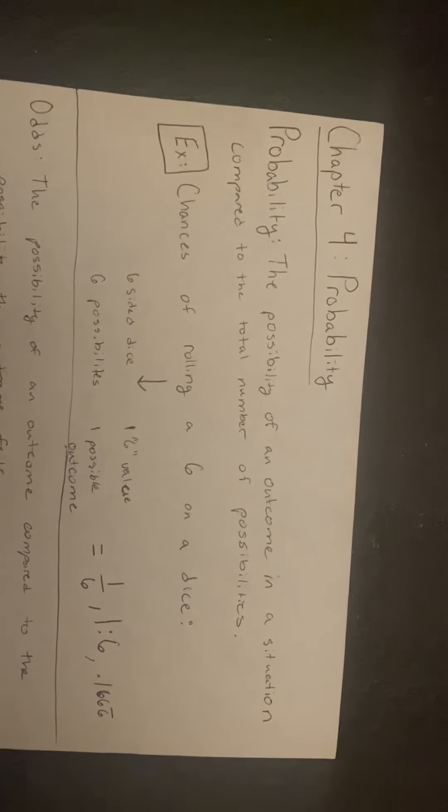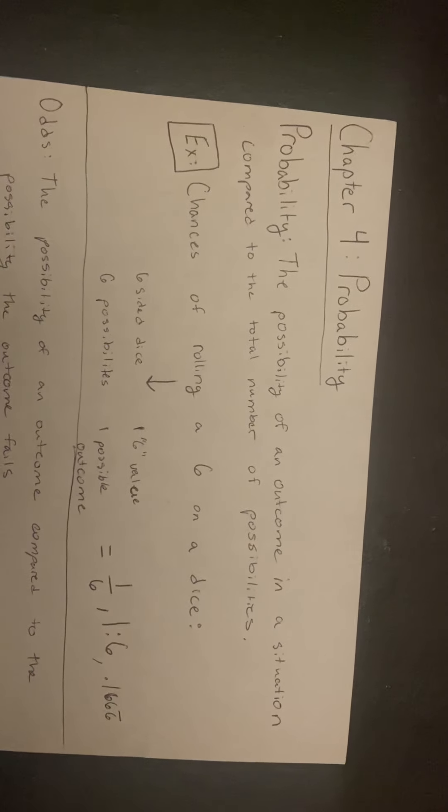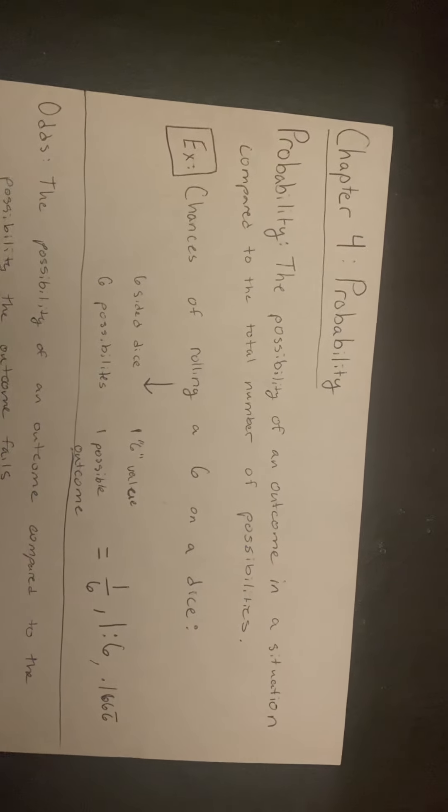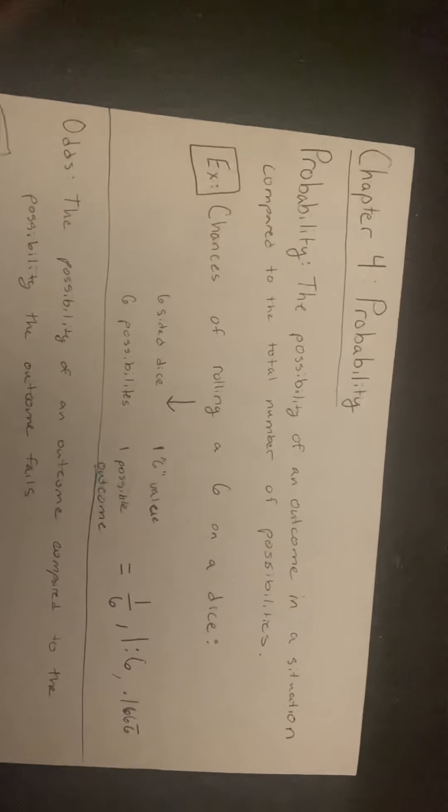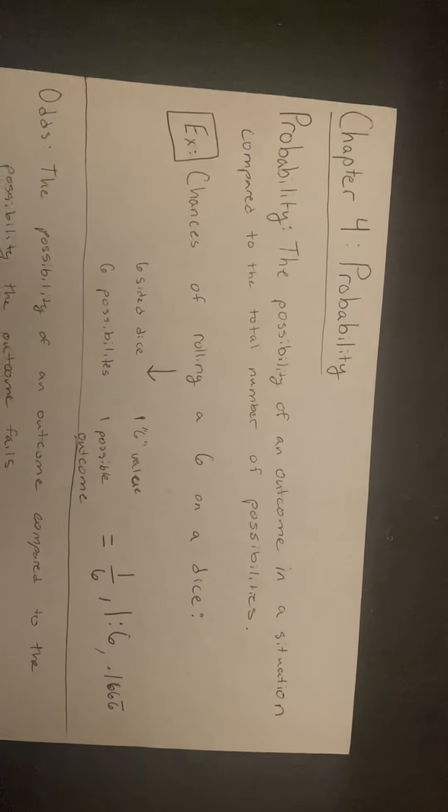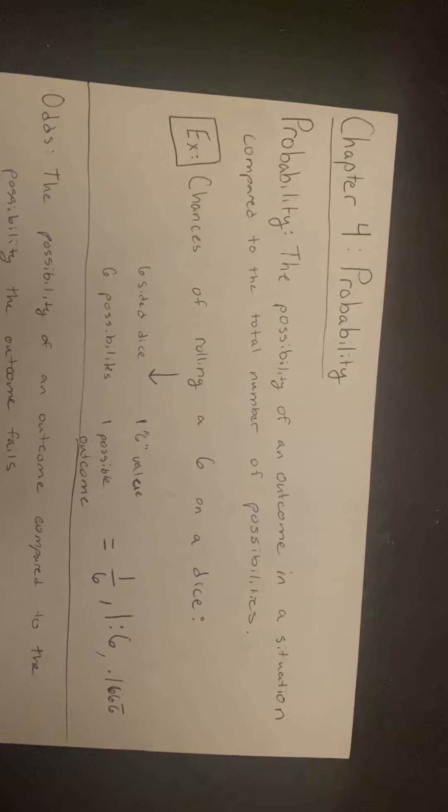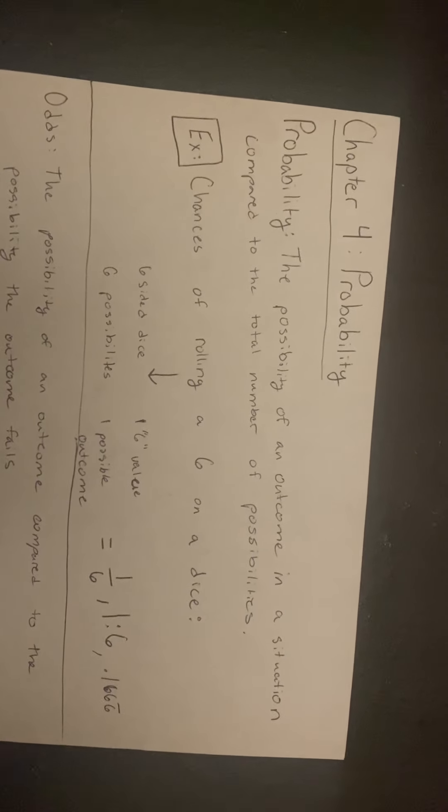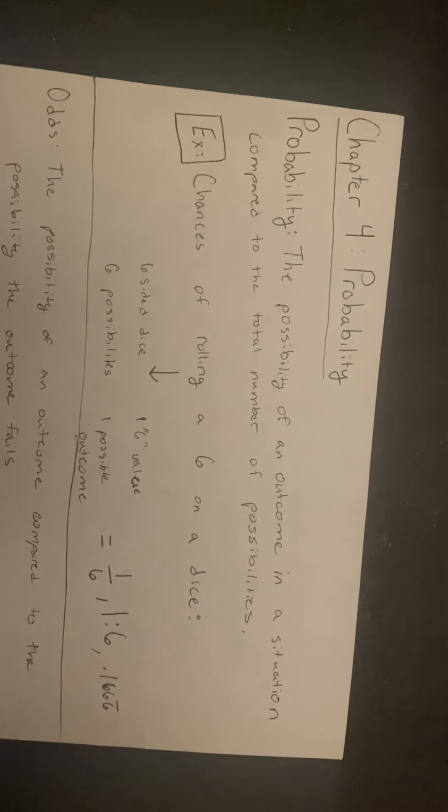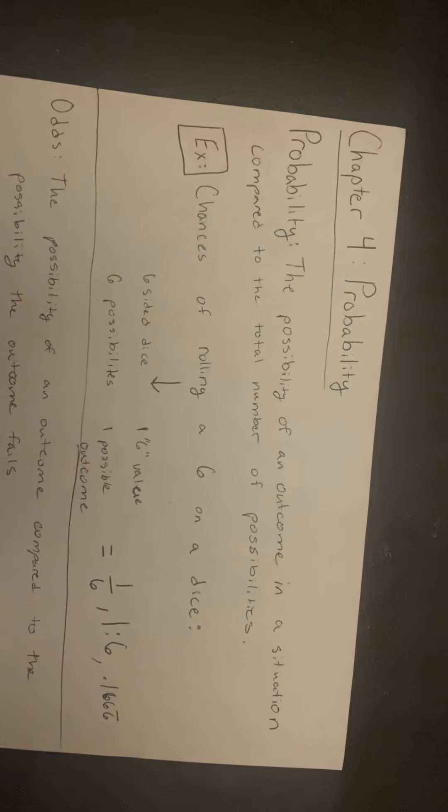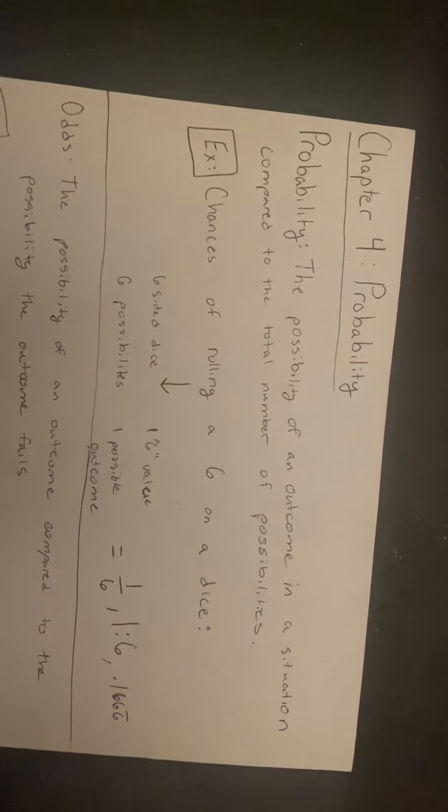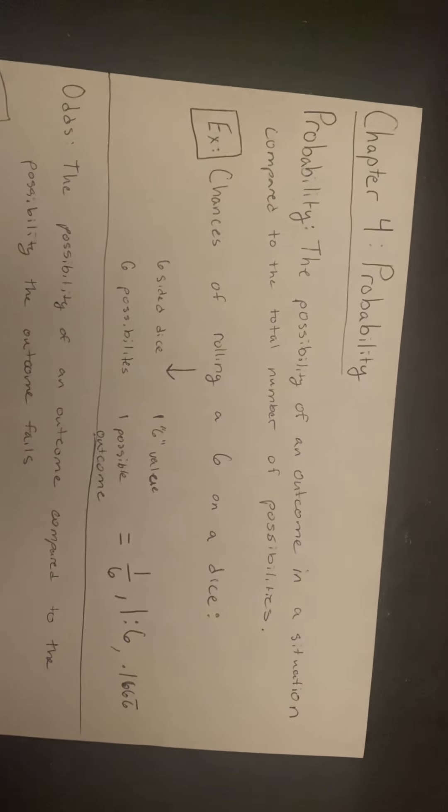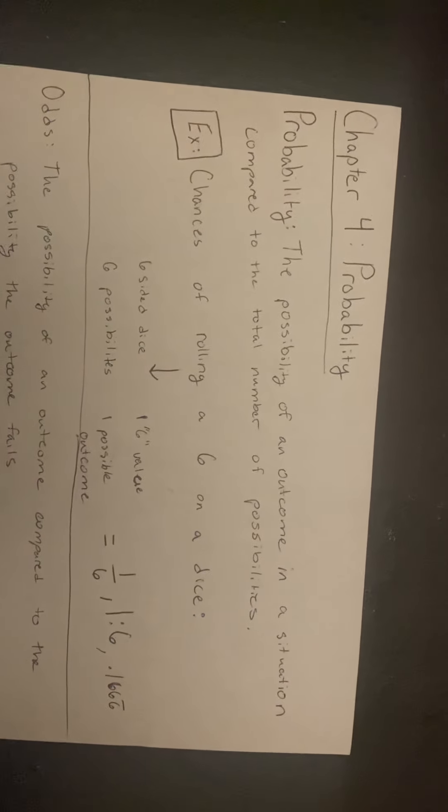The total amount of possibilities are 6 different numbers. However, there is only one 6 value on that dice, so there is only one possible outcome of hitting the 6. Because of this, the probability is the fraction 1/6.